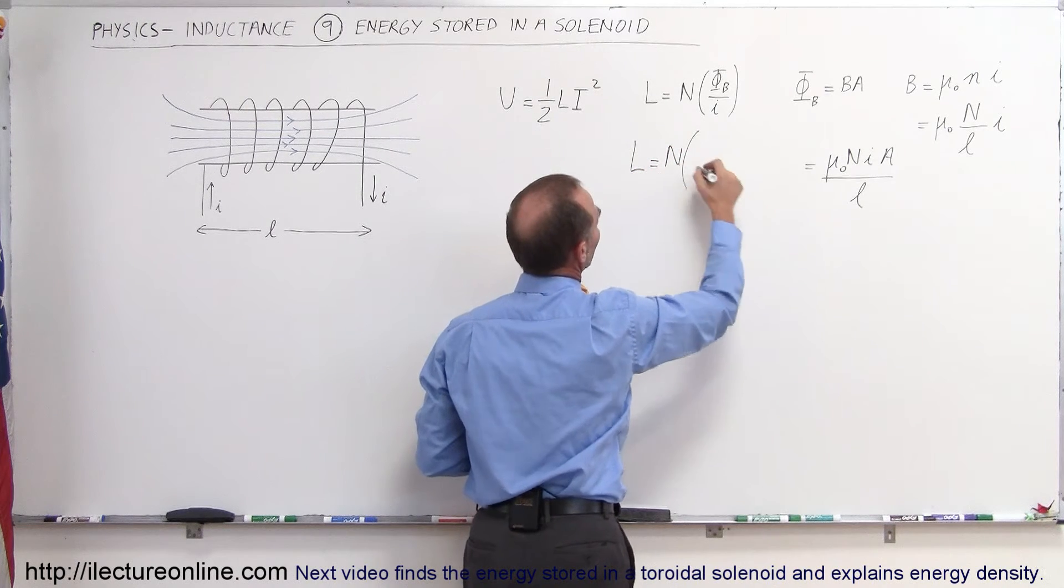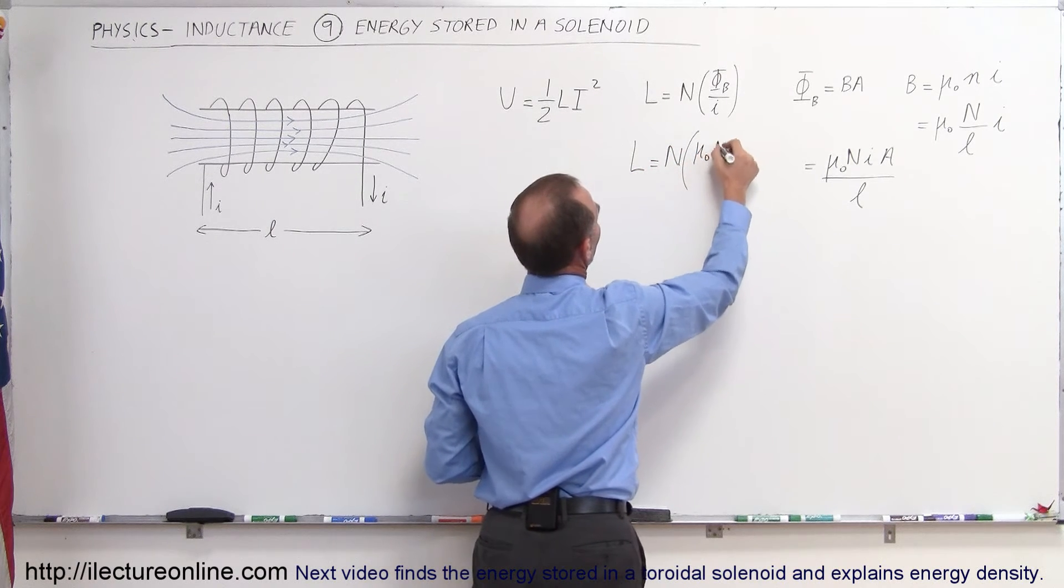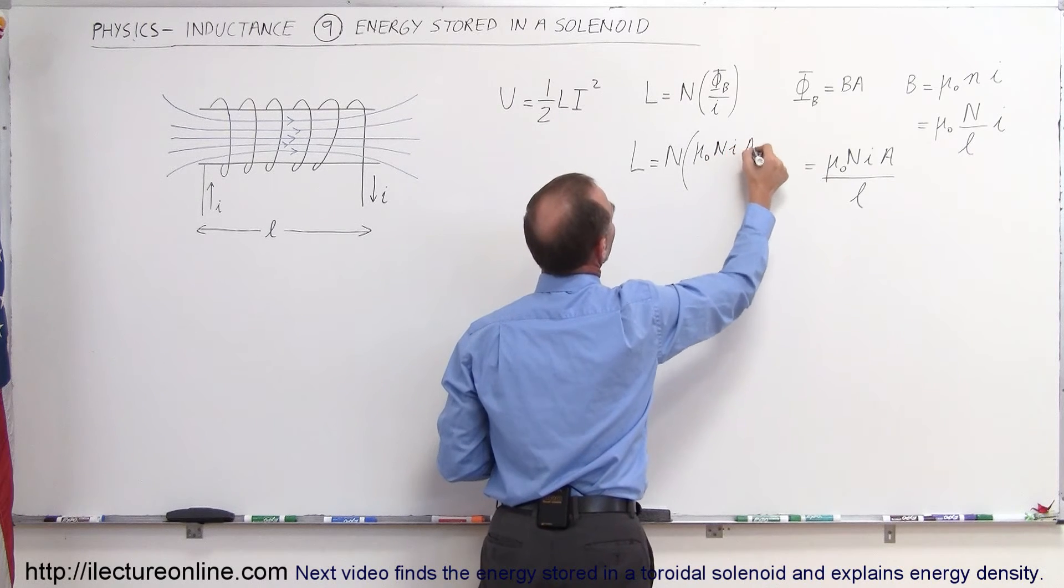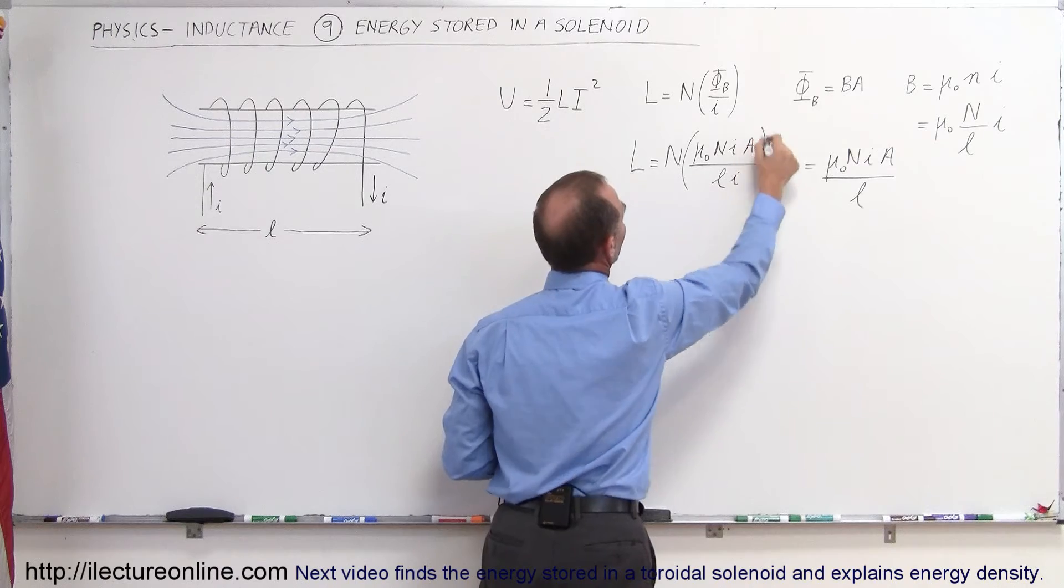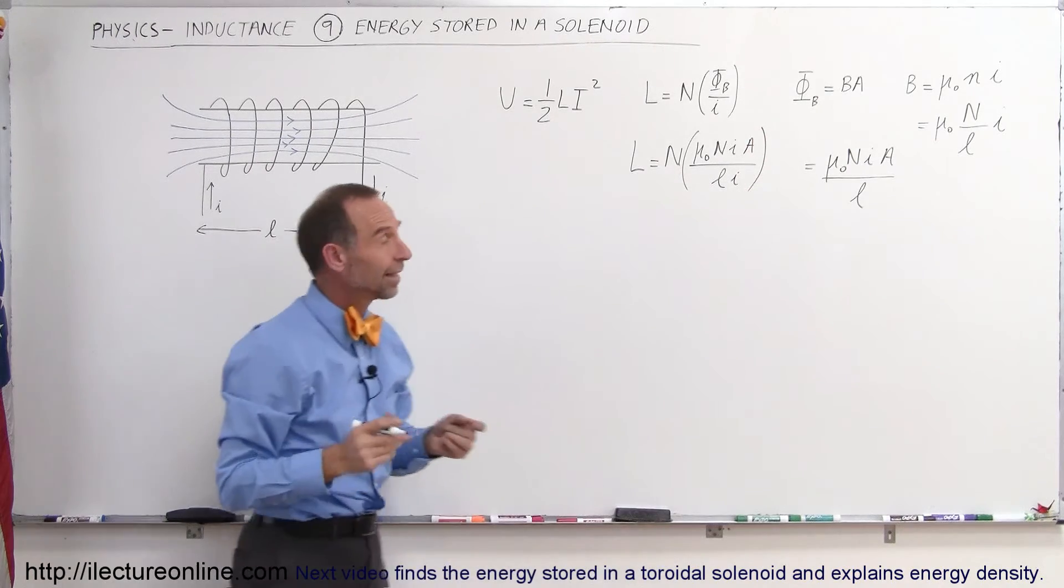And then you realize that in this case the I's cancel out and the N's can be multiplied together, so the self-inductance of the solenoid is equal to mu sub-naught times N squared times A divided by L.